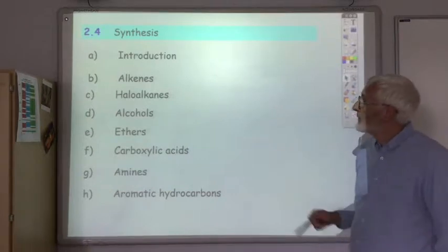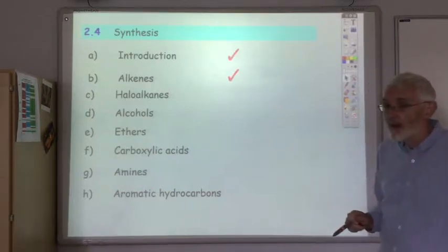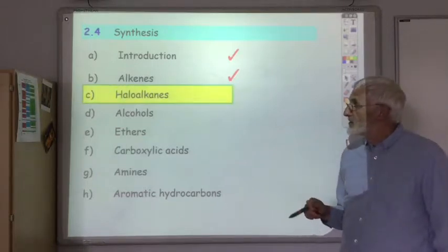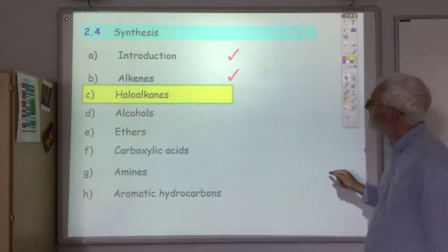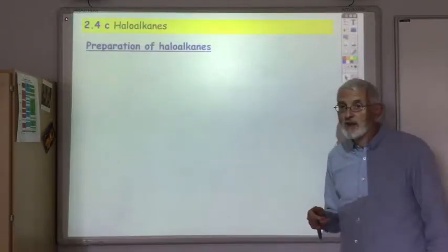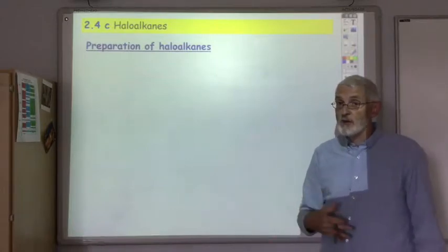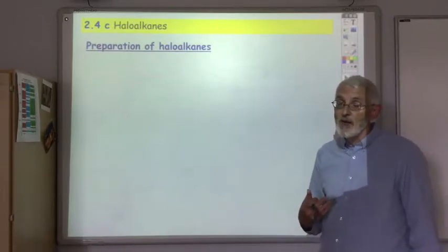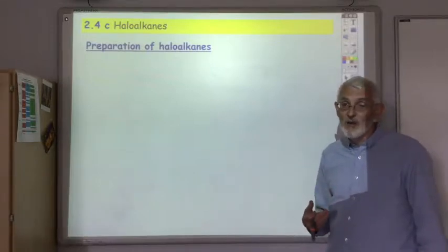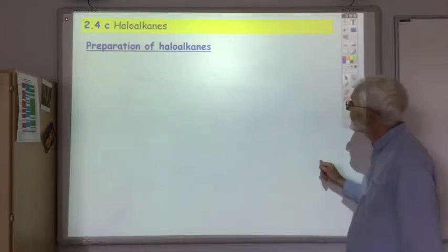So far in section 2.4 we've looked at the introduction and alkanes. In this series of lectures we're now going to look at the haloalkanes. Let's first briefly look at how you make a haloalkane. We saw in the previous section on alkanes that haloalkanes could be made by addition of halogens or hydrogen halides to an alkane.